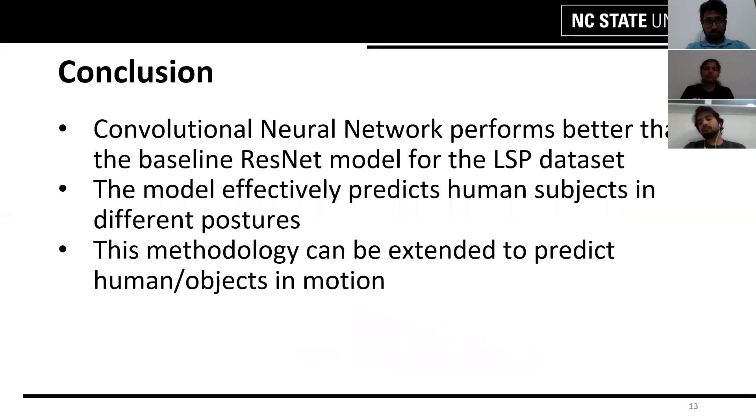Coming to the conclusion, we have established that our CNN performs better than the baseline ResNet architecture for our Leeds Sports Pose dataset. This model can effectively predict humans in different postures like moving, sitting, standing, or sleeping. This methodology can also be extended to predict humans or different objects in motion when we use applications such as different frames or videos. With this we conclude our presentation. Thank you.